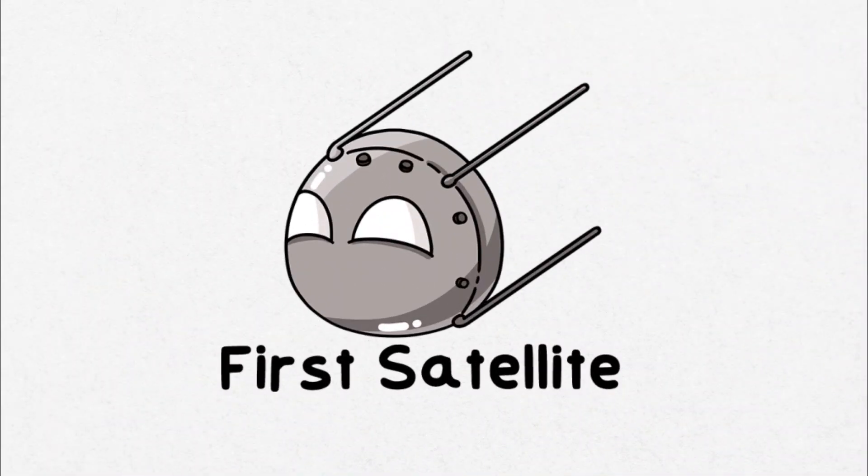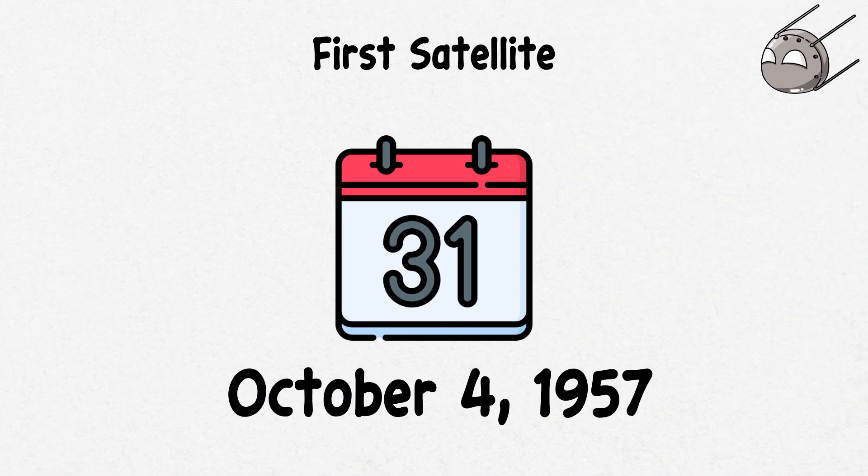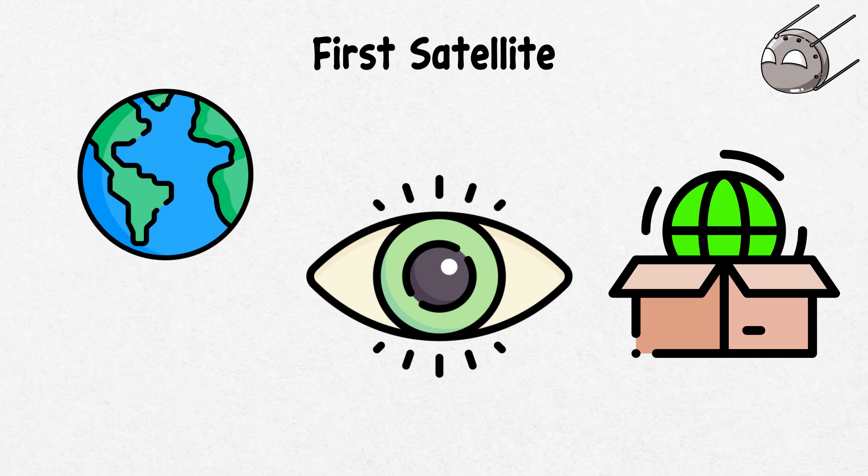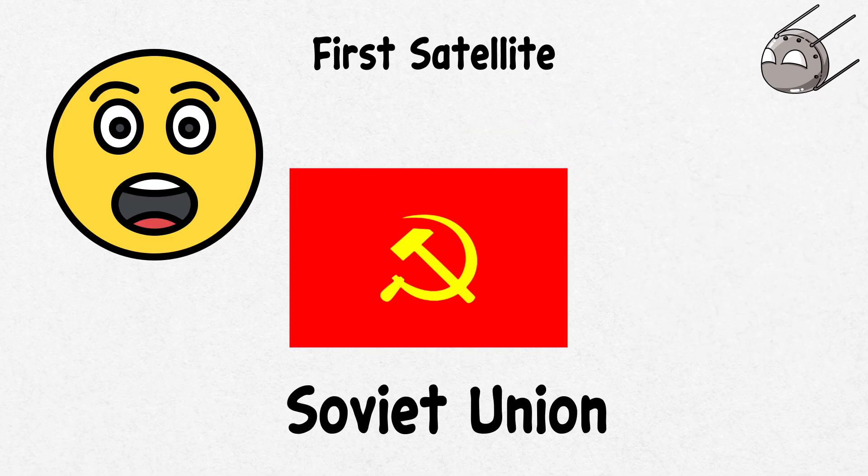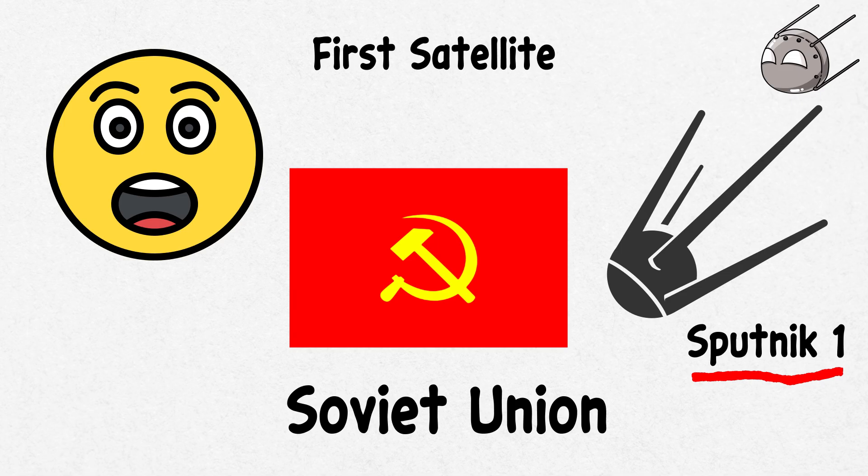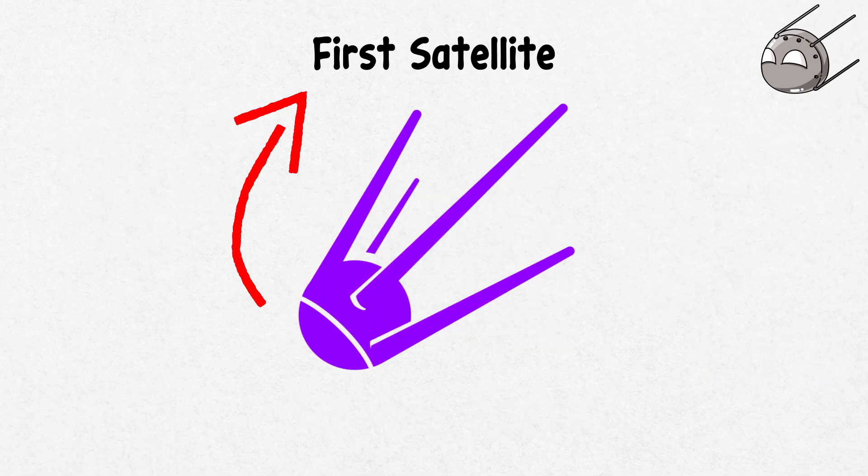First satellite. On October 4th, 1957, the world witnessed something out of this world, literally. The Soviet Union surprised everyone by launching Sputnik 1, the very first artificial satellite, into space.